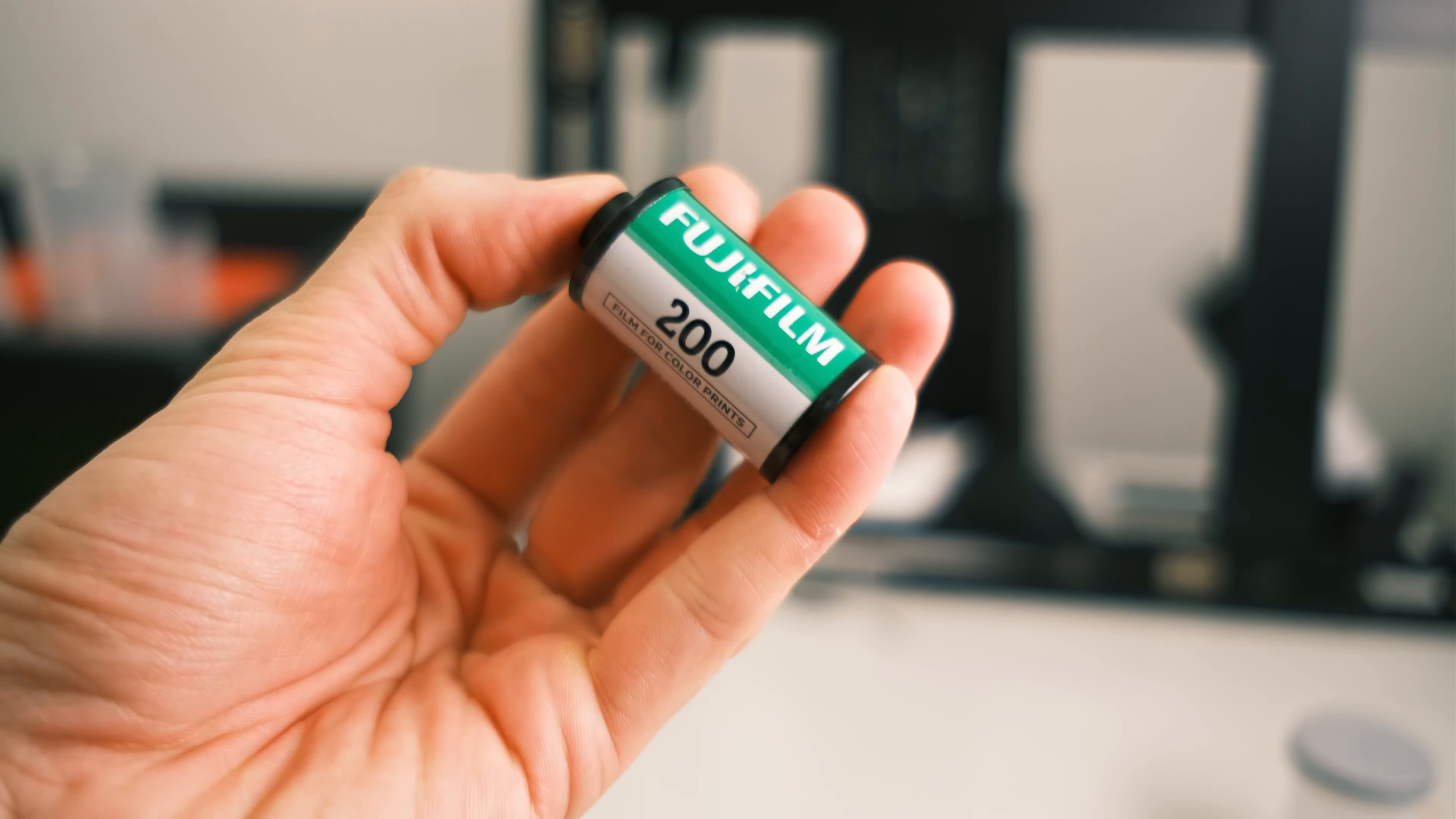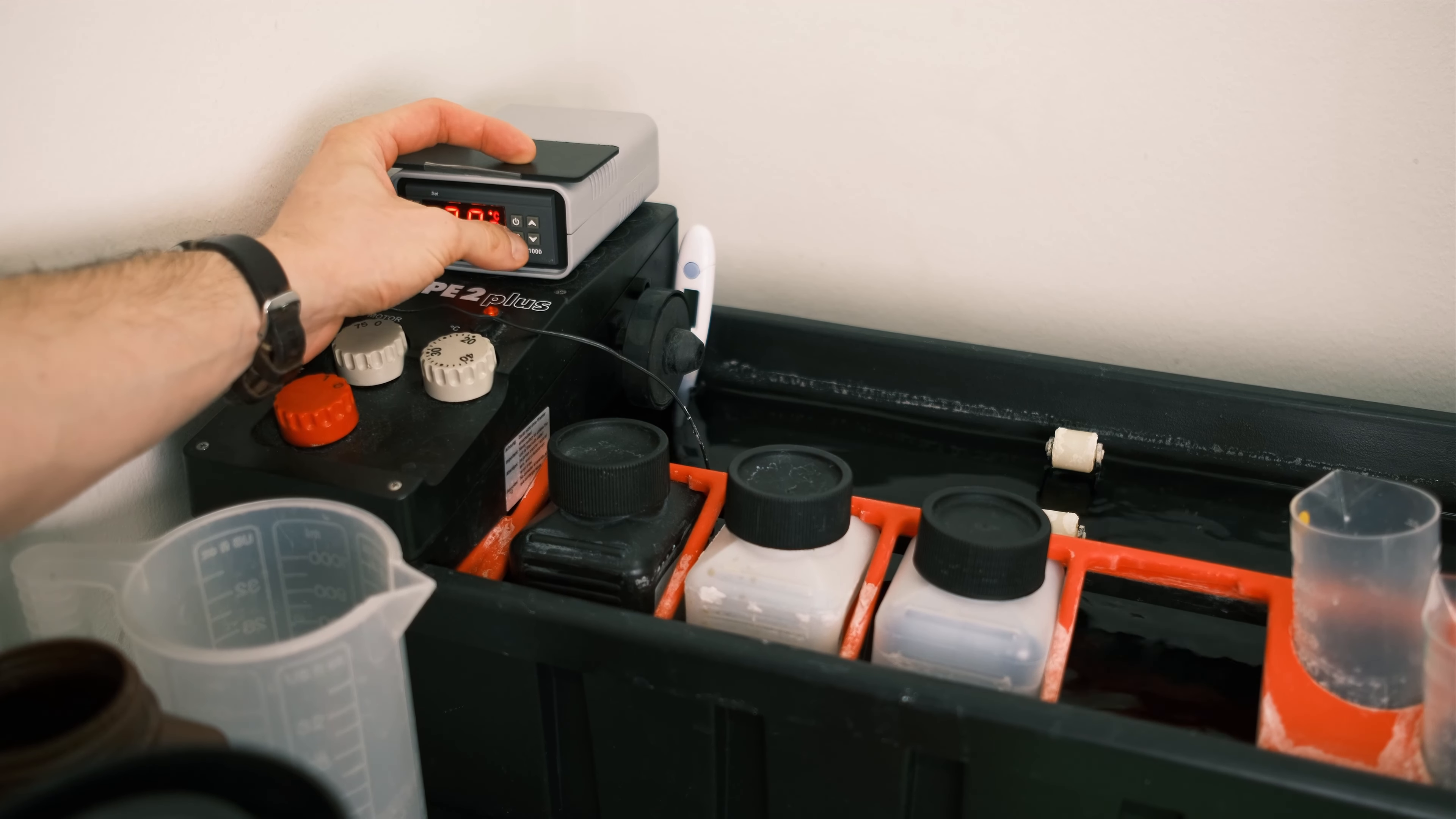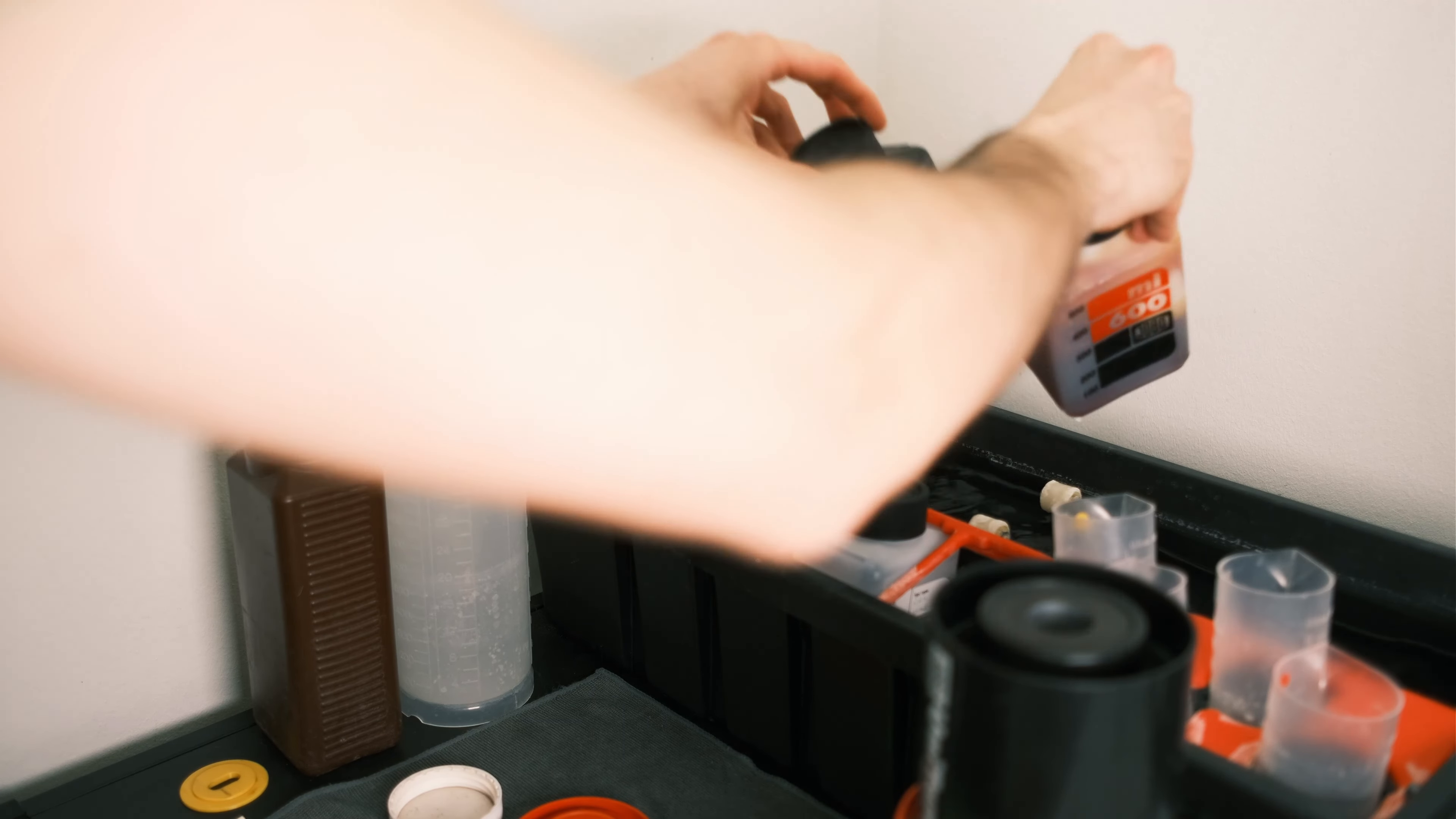So I basically set up ISO 100 on my exposure meter and later develop it normally in the normal procedures with three minutes, 15 seconds in the Fuji Hunt kit.